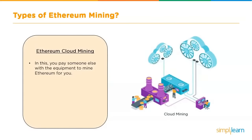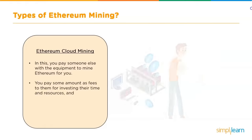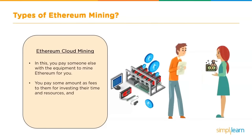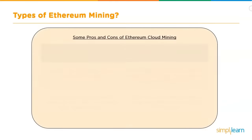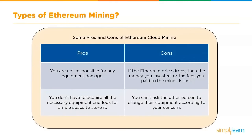Ethereum cloud mining: you pay someone else with the equipment to mine Ethereum for you. You pay fees for their time and resources, and in return they provide you with the mining reward. Pros: you're not responsible for equipment damage, you don't need all the necessary equipment or storage space, and you can sit back, observe the market, and enjoy the reward for your investment. Cons: if the Ethereum price drops, there is no way to get your money back — the fees paid to the miner are lost, and you can't ask the other person to change equipment according to your concerns. Cloud mining is considered a safer way for service providers to guarantee a profit for the resources they have purchased.